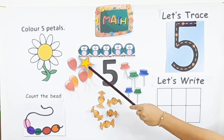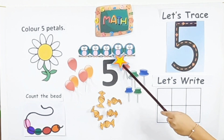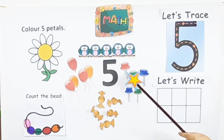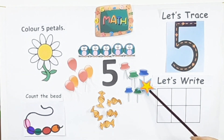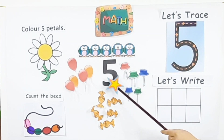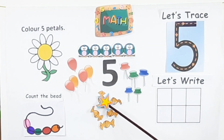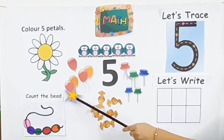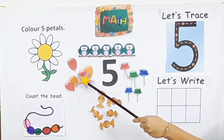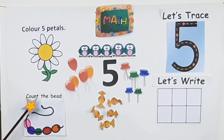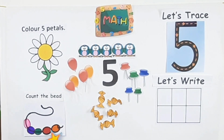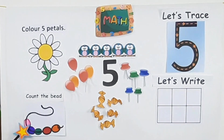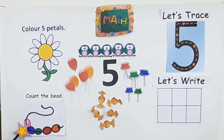Now let's count the owls — one, two, three, four, five. How many owls? Five owls. Now let's count the nails — one, two, three, four, five. How many nails? Five nails. Now let's count the toffees — one, two, three, four, five. How many toffees? Five toffees. Now let's count the balloons — one, two, three, four, five. Five balloons. Now count the beads — one, two, three, four, five. Five beads in the string.